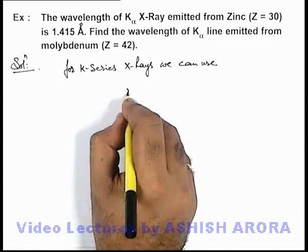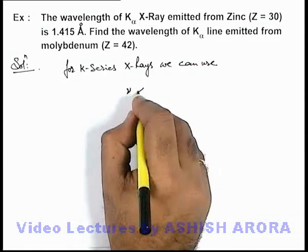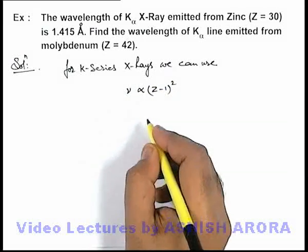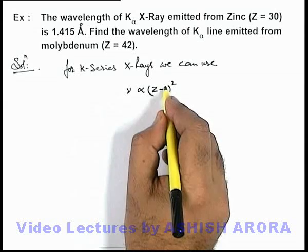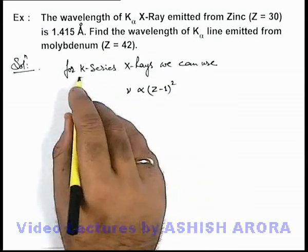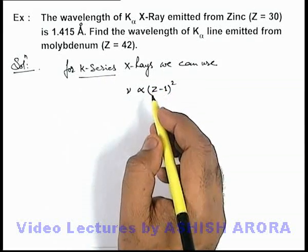The frequency of emitted X-ray is directly proportional to (Z-1)². Here I have already taken the screening constant to be 1 because we know that for K series of X-rays, the value of sigma is 1.